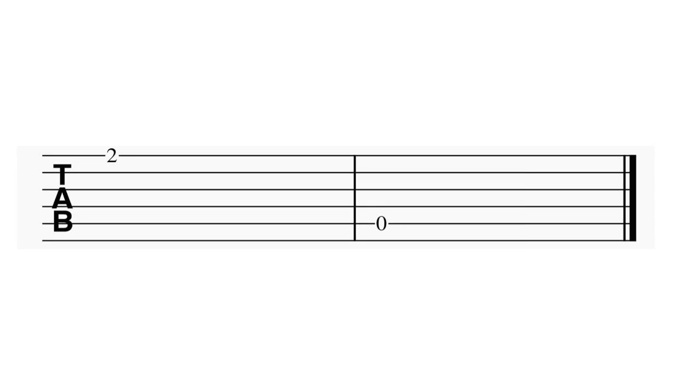The six lines of the tab represent six guitar strings, from the first string on top to the sixth string on bottom. The number on any given line tells you which fret to press on that string.